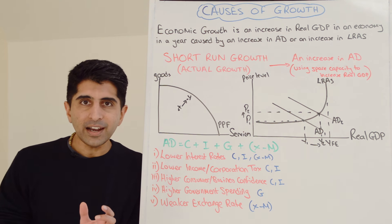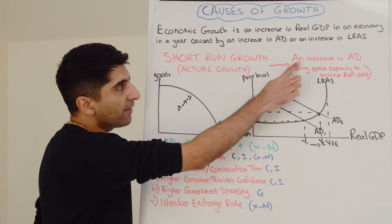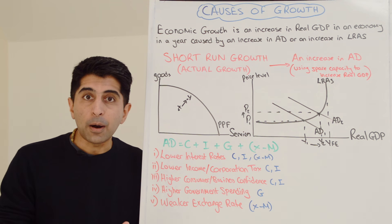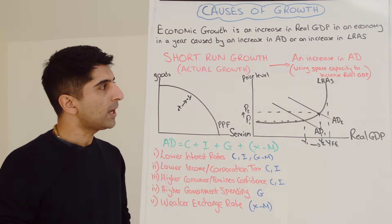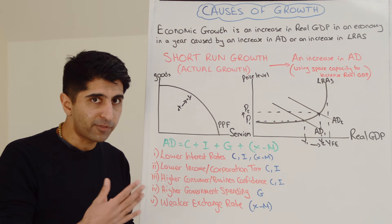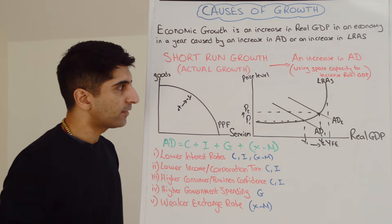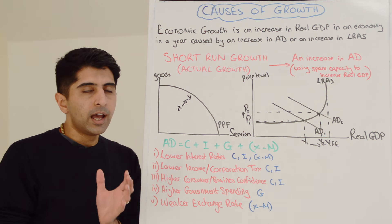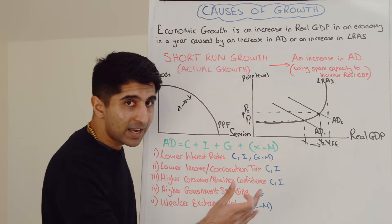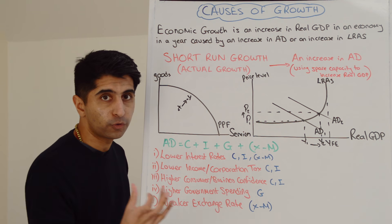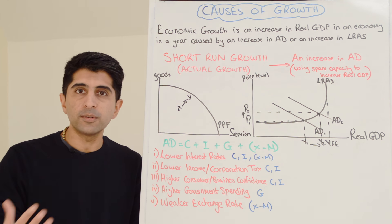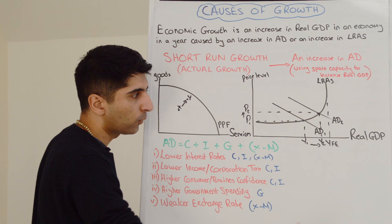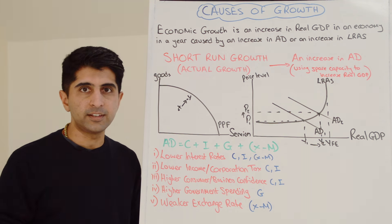Let's take an increase in AD first. That is known as short-run growth, also known as actual growth. Whenever there is an increase in aggregate demand, the economy is using up spare capacity in order to increase the output of goods and services and increase real GDP. We can show that on an AD-AS diagram — I've used the Keynesian version. A basic shift of aggregate demand to the right shows the economy closing a negative output gap, moving towards YFE. So a shift of AD from AD1 to AD2 shows growth from Y1 to Y2, moving towards YFE using up spare capacity.